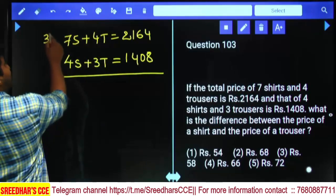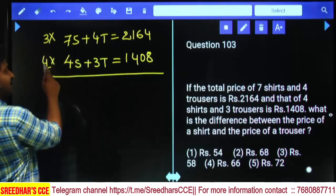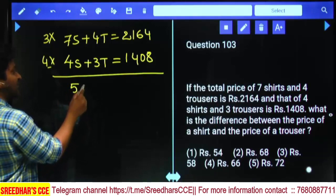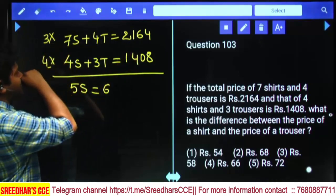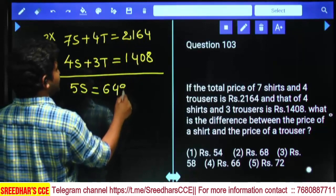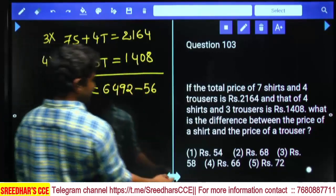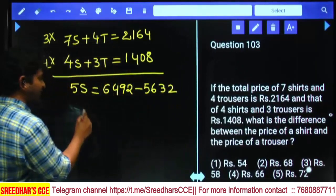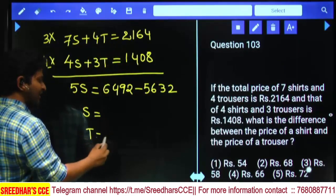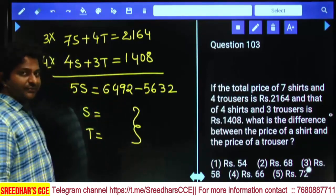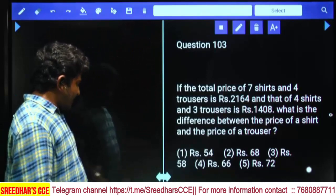Multiply the first one with 3 and the second one with 4. 12T gets cancelled, then the difference will be 21S minus 16S equals 5 shirts. The price is 3 times 1616, that's 4848 plus 12 equals 4992, minus 4 times 1408 equals 5632. Now using this we can identify the shirt price, then substitute in either equation to get trouser cost, and finally calculate the difference.